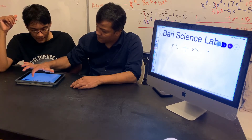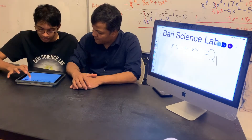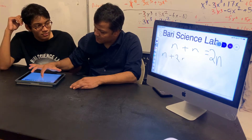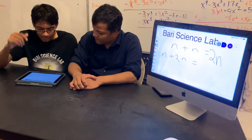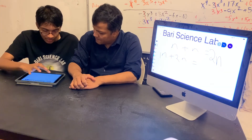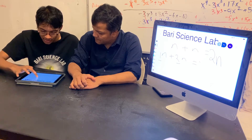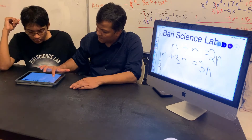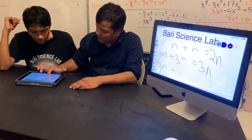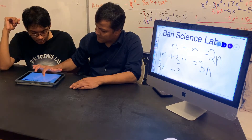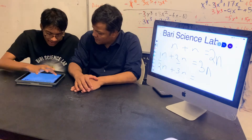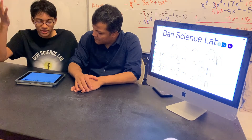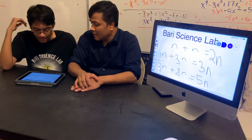N plus N is how much? 2N. N plus 2N is how much? This is the invisible one, so 1 plus 2 is 3, then put the N — 3N. So 2N plus 3N is how much? I have to add the coefficients: 2 plus 3 is 5, then put the N — 5N. Very good.